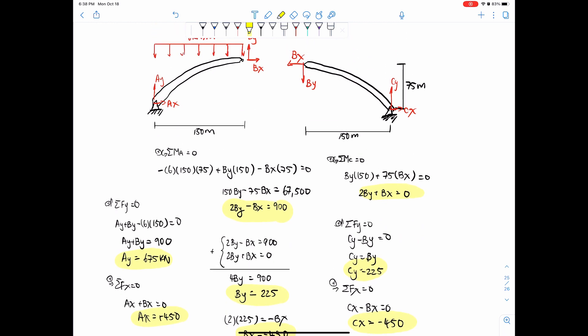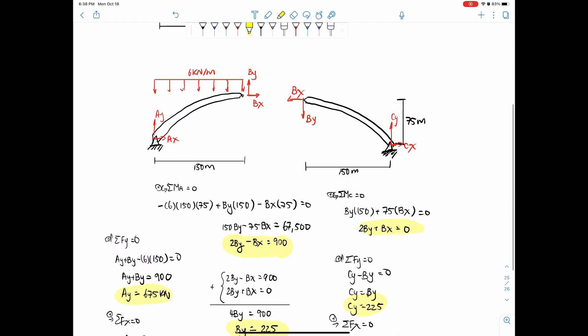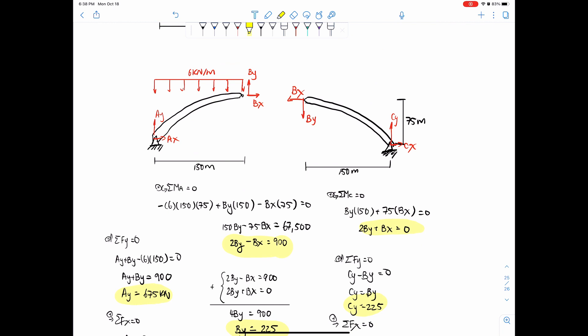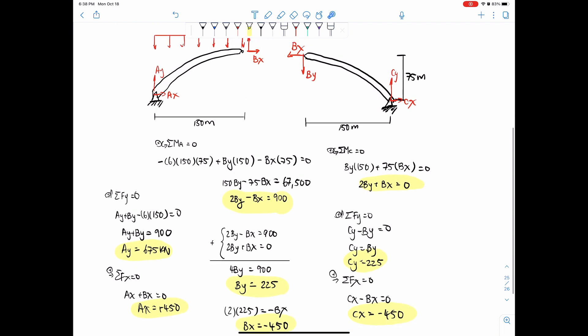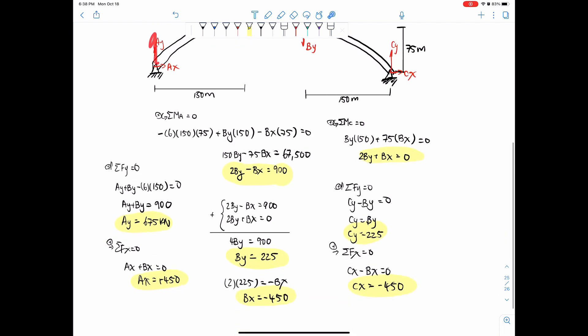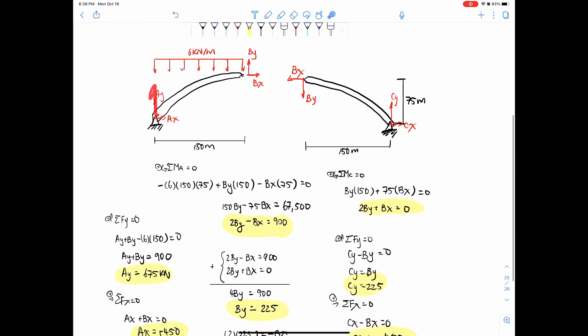So now that we have this, it's good to do a logical check as well. So we have the reactions in the X direction kind of pushing back like this. And then we have the vertical reactions just going upwards, 675 on this side, and 225 on this side. Which makes sense, because if you apply a load here, chances are this reaction is going to be greater, this AY value.